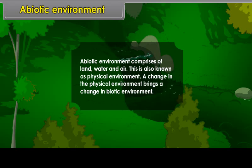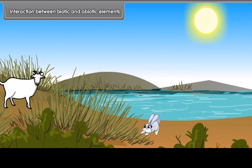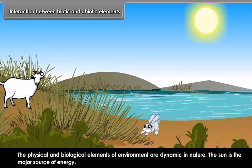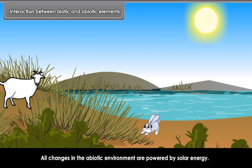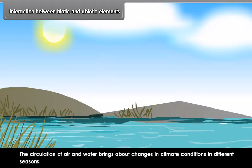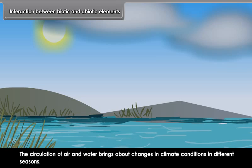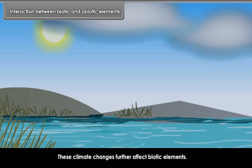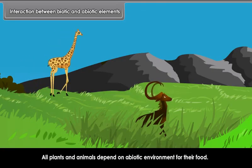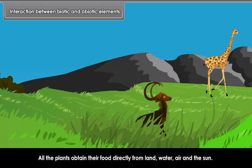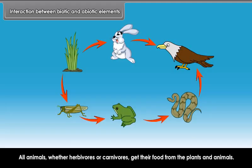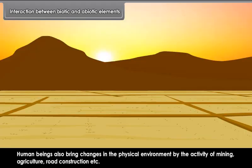Interaction between biotic and abiotic elements: The physical and biological elements of environment are dynamic in nature. The sun is the major source of energy. All changes in the abiotic environment are powered by solar energy. The circulation of air and water brings about changes in climate conditions in different seasons. These climate changes further affect biotic elements. All plants and animals depend on abiotic environment for their food. All plants obtain their food directly from land, water, air, and the sun. All animals, whether herbivores or carnivores, get their food from plants and animals. Human beings also bring changes in the physical environment by the activity of mining, agriculture, road construction, etc.